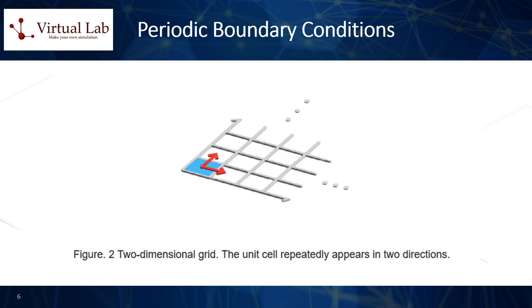When you stack 100 identical Lego blocks on top of each other, is the resulting structure considered a zero-dimensional or one-dimensional material? If the properties of the material inside remain the same as the block thickness increases in the repeating direction, it can be categorized as having a one-dimensional crystal structure. On the contrary, a two-dimensional material exhibits two-dimensional periodicity, as a single unit repeatedly appears in two directions.